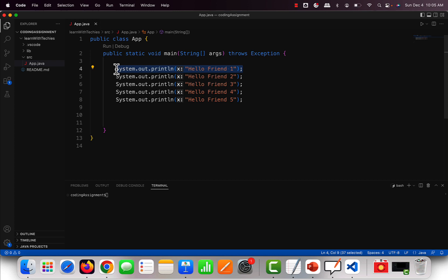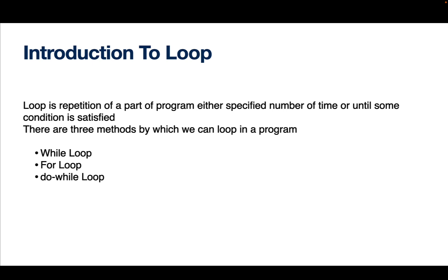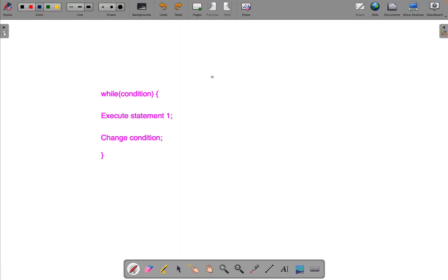We need a way to execute one statement a thousand times or five times. That's why we need a loop. A loop is the repetition of a part of a program either a specified number of times or until some condition is satisfied. Instead of writing the same line five times, we write it once but tell the computer to run it five times. There are three looping methods in Java: while loop, for loop, and do-while loop.